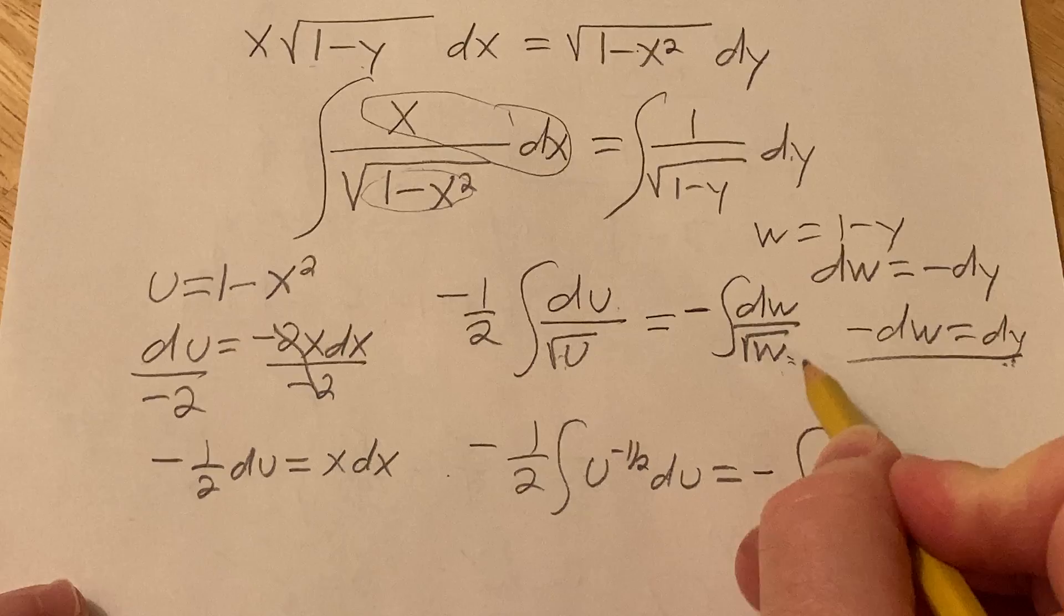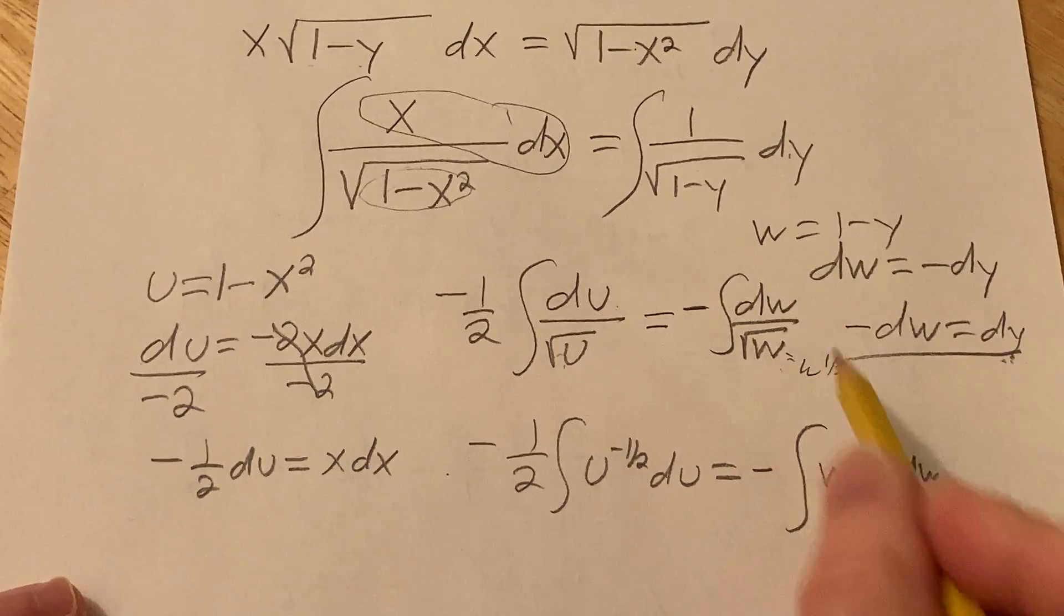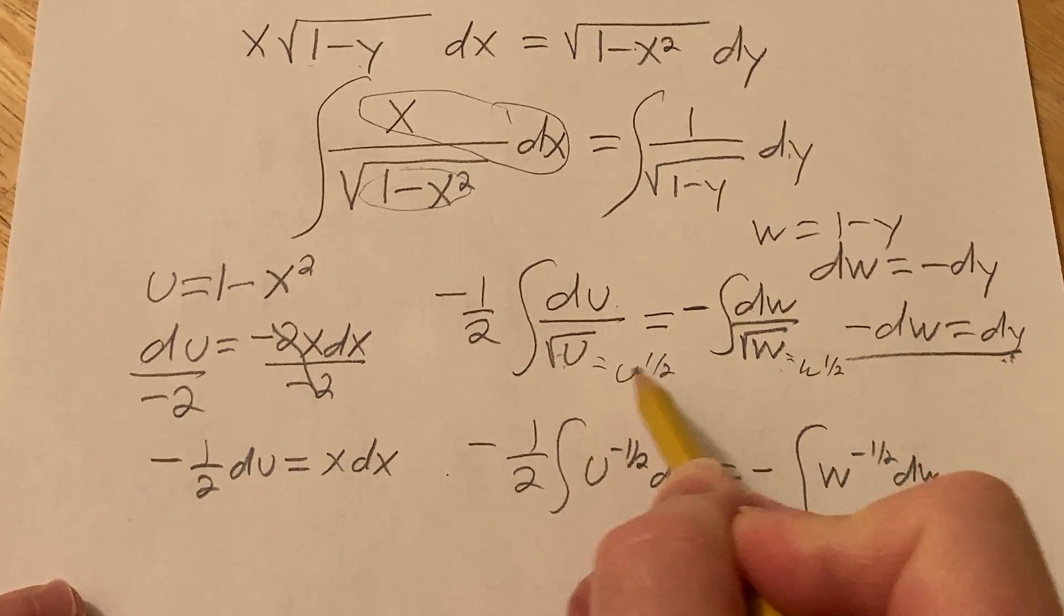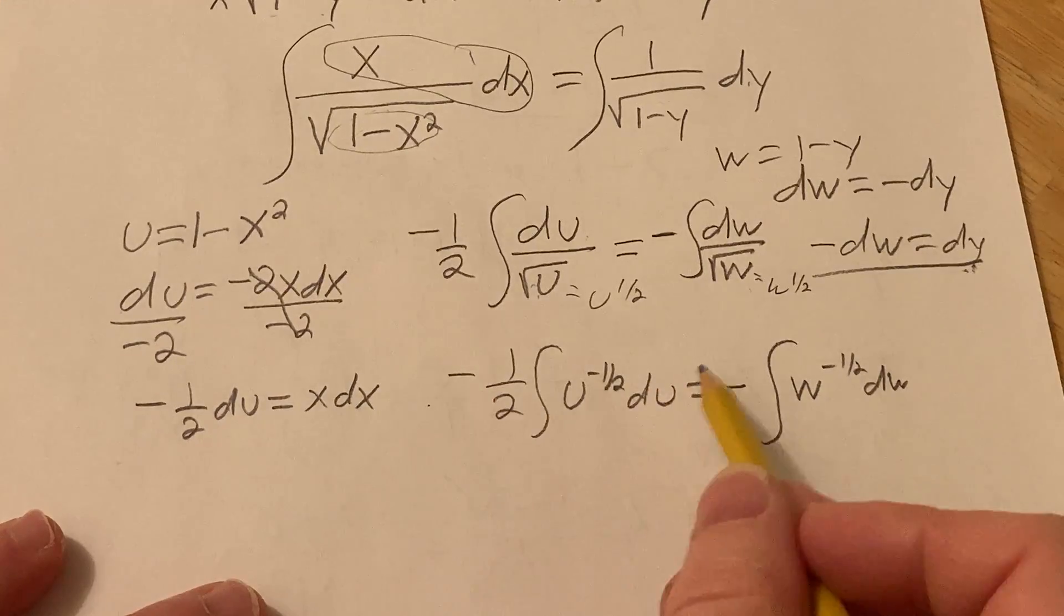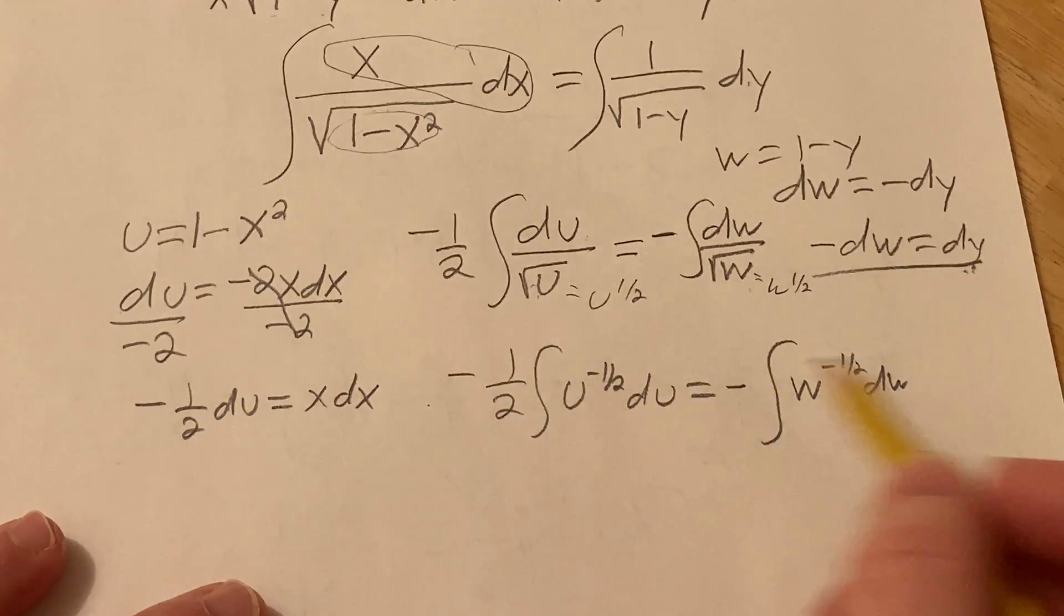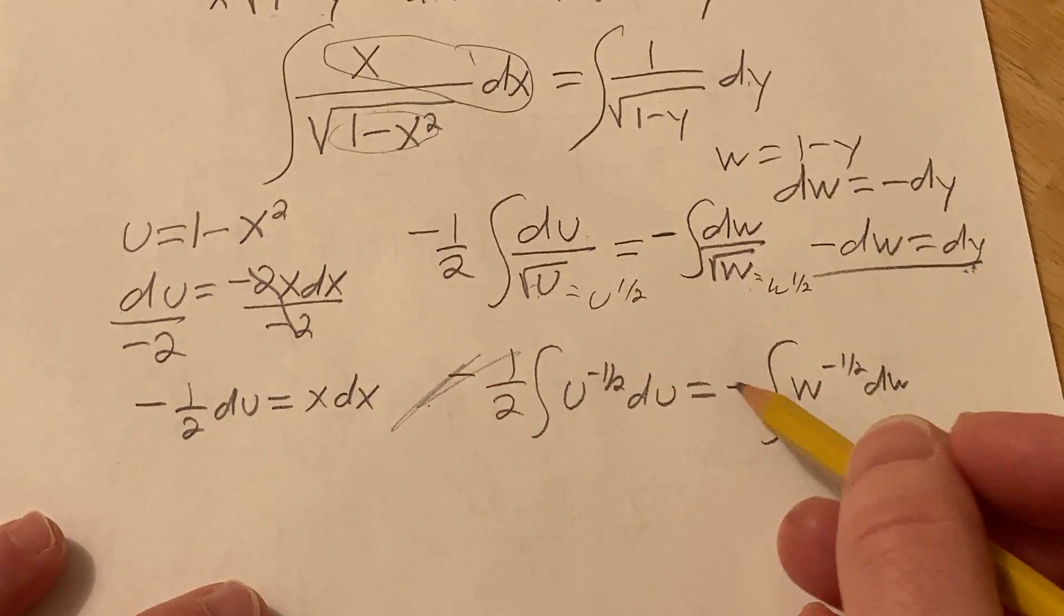Again, this is w to the 1 half, and you bring it up and it becomes negative. Same thing here. This is u to the 1 half, you bring it up and it becomes negative. We can eliminate these negatives, just divide them away, so they're gone.